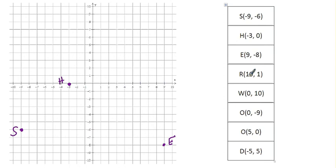R is ten to the right and one up. W is zero over and ten up.